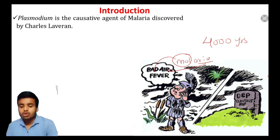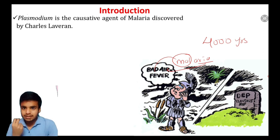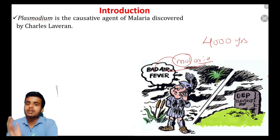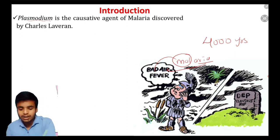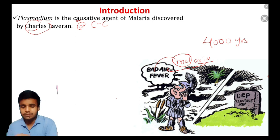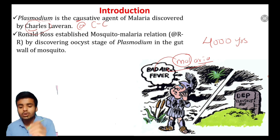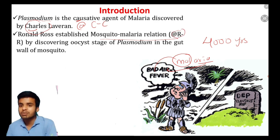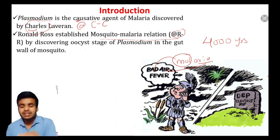In any disease, first you need to know the causative agent. The causative agent of malaria is Plasmodium. Based on different types of malaria, we have different species of malarial parasite. This causative agent was discovered by Charles Laveran. Next, Ronald Ross established the mosquito-malaria relation - the relationship between mosquito and malaria was found out by Ronald Ross.